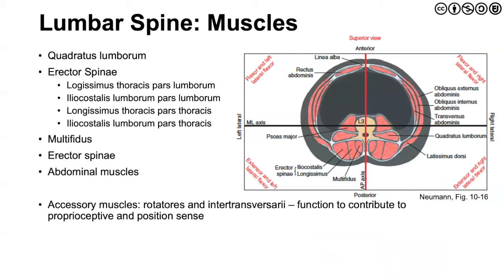There are muscles intrinsic to the lumbar spine as well as muscles acting at a distance more associated with the hip, lumbosacral, or thoracic regions. The ones that get the most attention are the quadratus lumborum (QL), the erector spinae, and the multifidae. You can see that illustrated in a cross-sectional graphic from Don Newman's text. Moving to the lateral side, we can see our obliques — both internal and external — as well as the deep transverse abdominus layer, and finally the rectus abdominis anteriorly. There are also accessory muscles like the rotatores and intertransverse muscles, which function to contribute to proprioceptive and position sense — allowing us to fine-tune motion.